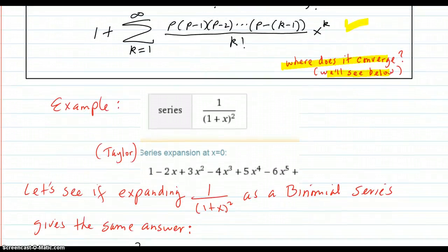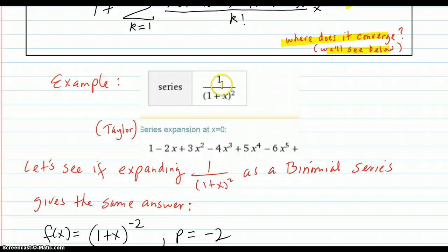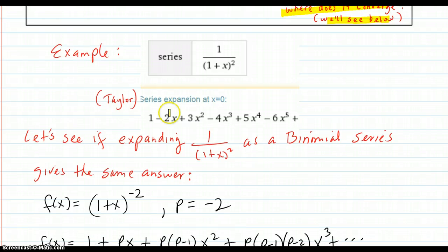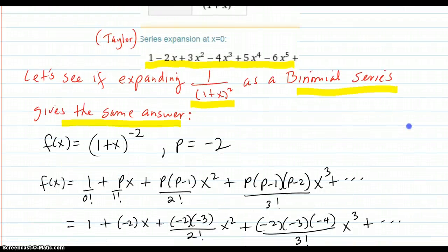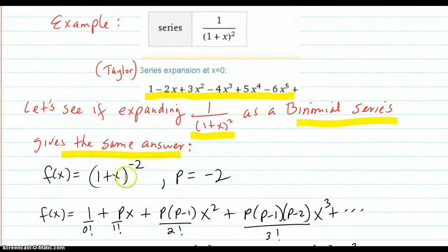So here's an example. Expand out 1 over 1 plus x squared. We're going to use the binomial series. But first, we go into Wolfram Alpha and find out that the series expansion using Taylor is this. So let's see if expanding this as a binomial series gives the same answer. So to write it in binomial series form, it would be 1 plus x to the p, and p is negative 2.